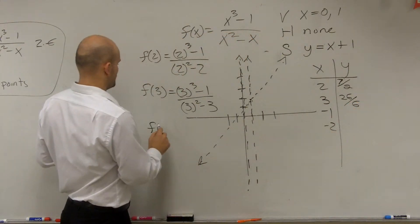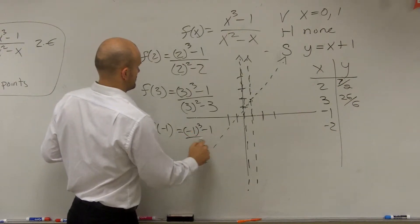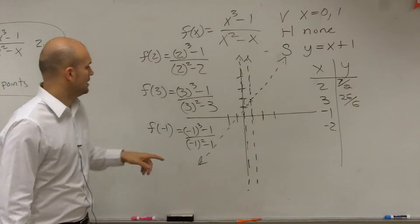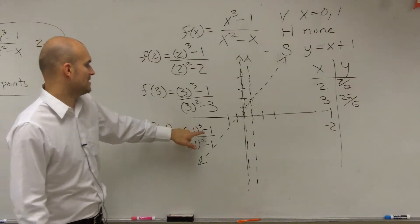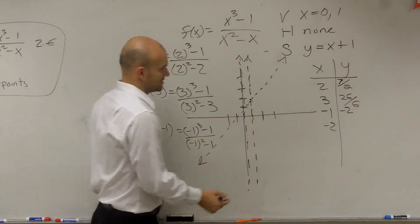And then we do f of negative 1. So that becomes negative 1 minus 1 is negative 2. Negative 1 minus 1 is negative 2.